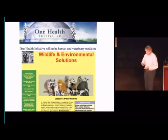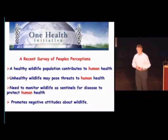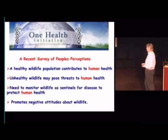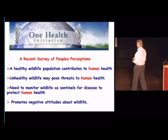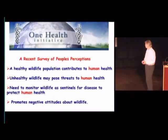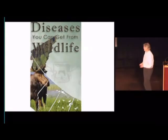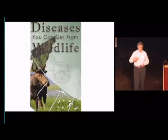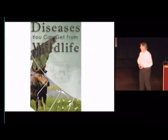This is an interesting paper looking at people's perceptions in relation to the One Health initiative about wildlife and disease. The conclusions show how it's very much balanced towards how wildlife may affect human health: 'A healthy wildlife population contributes to human health'; 'Unhealthy wildlife may pose threats to human health'; 'We need to monitor wildlife as sentinels for disease to protect human health.' This quite clearly promotes negative attitudes about wildlife. And it's very easy to Google 'disease wildlife' and get things like 'Diseases you can get from wildlife' — quite often used to promote the idea that hunting wildlife is good because they've got nasty diseases they can give to us.